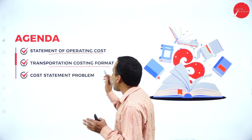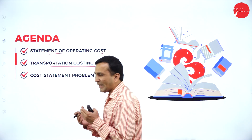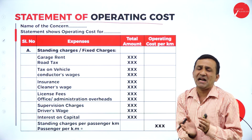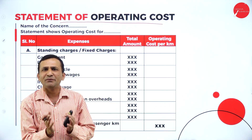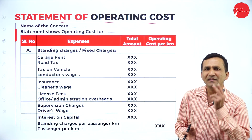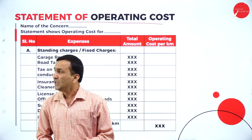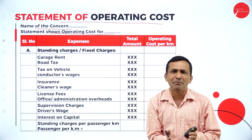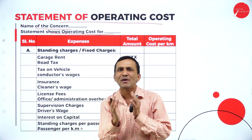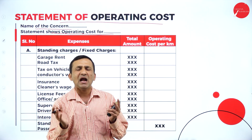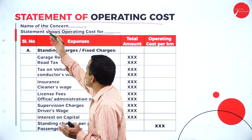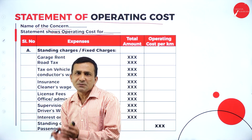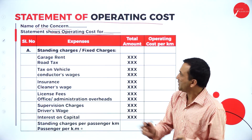According to your syllabus, the problem is expected from transportation service as well as hospital service and education institution. This session is completely focused on transportation. Here is the transportation cost format, which will give you more clarity about the format — what items you can see in the cost statement problem. The format for operating cost is completely for the transportation problem. There are different types of transportation services offered to people — the major one is passenger, and another is goods carrying.